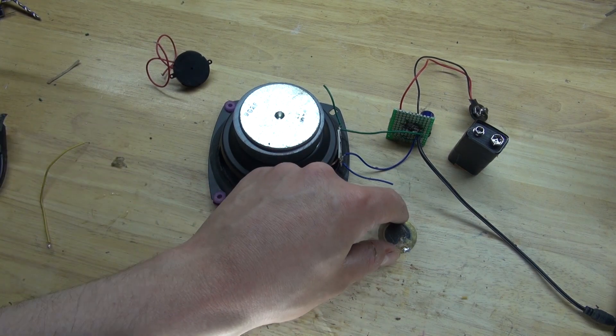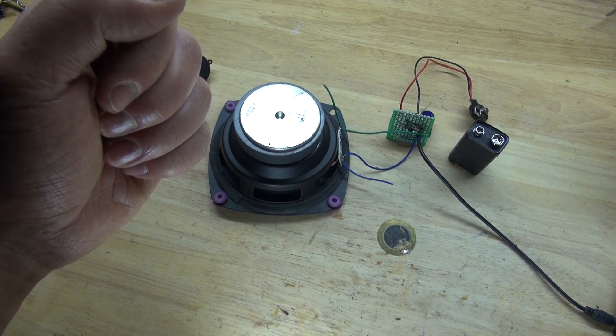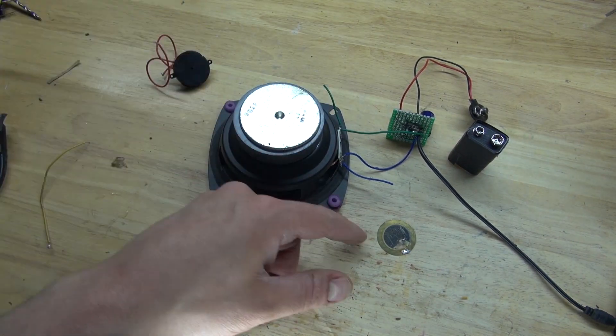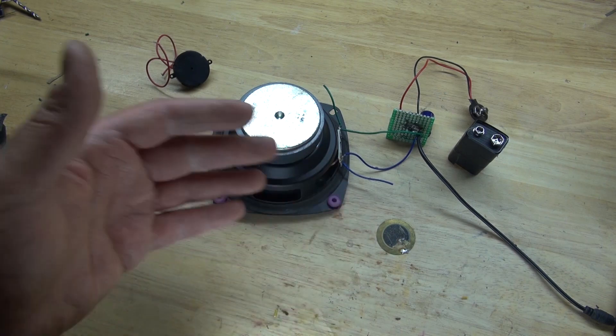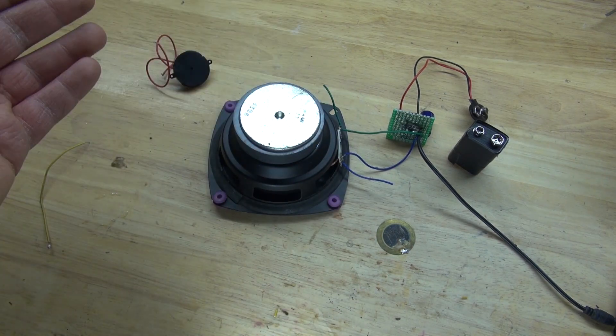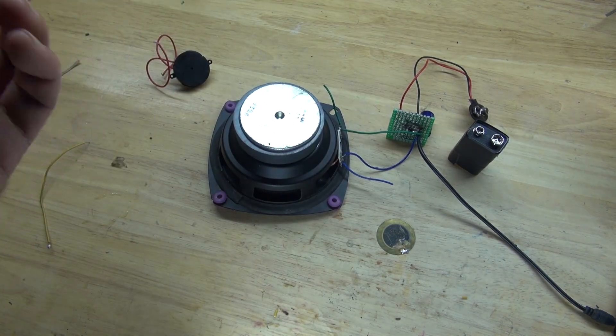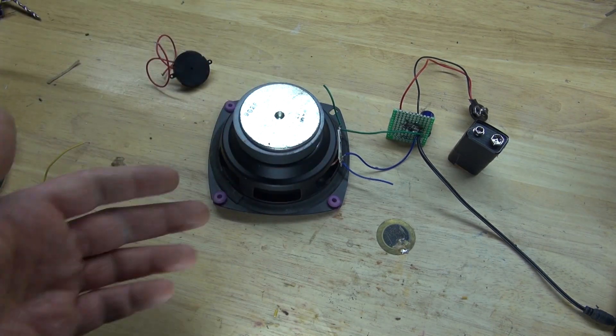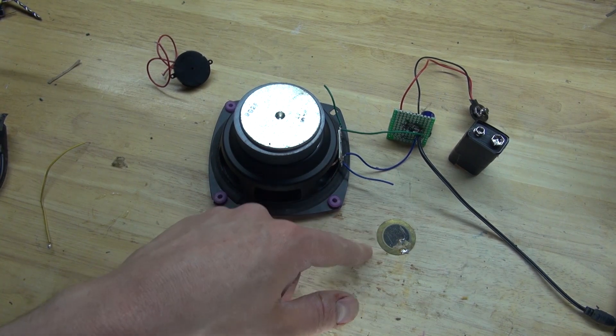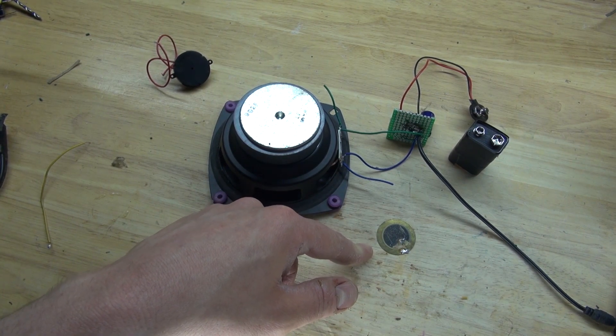Or maybe even putting it on the window if someone's trying to break in. It'll sense the window being tapped on. Or even placing it in a hallway or a floor or on a stairway or any kind of surface where someone is just simply walking by and it senses the vibration. Lots of different ideas that I can do for this as being a sensor. So perhaps I'll try that in a future video instead.